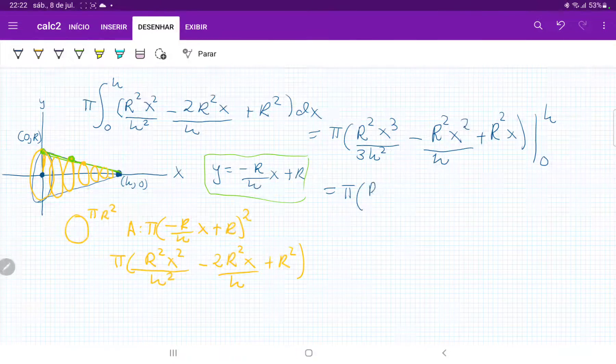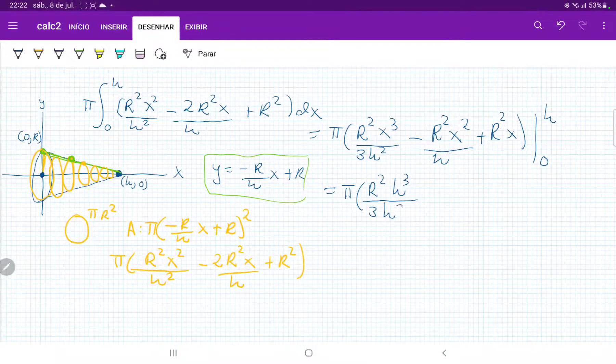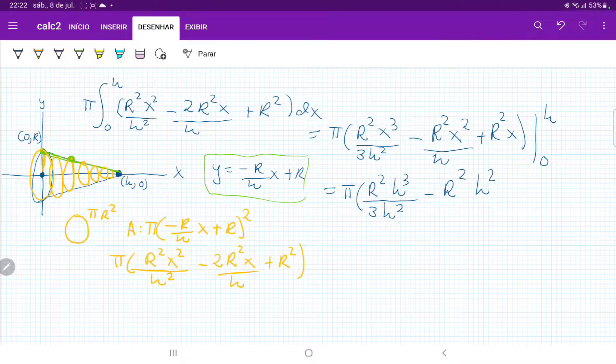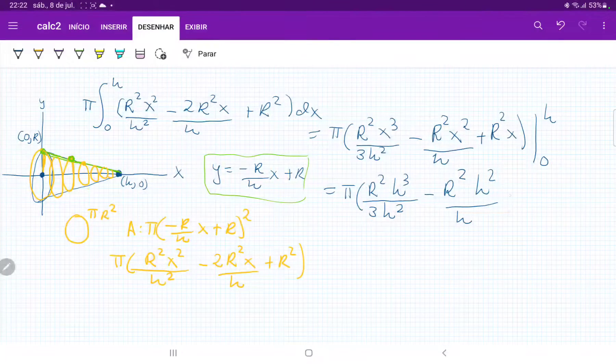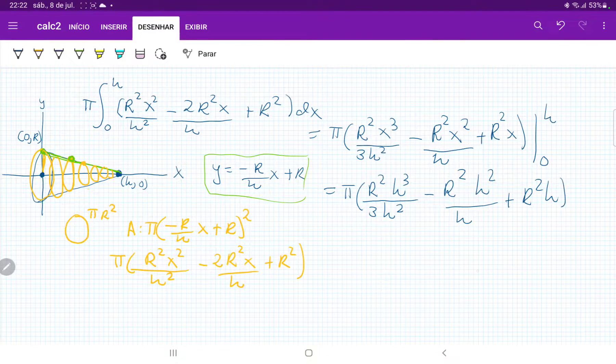So let's evaluate it now just using the upper boundary, which is the h. So that's going to give us pi times r squared h cubed over 3h squared minus r squared h squared over h plus r squared h.